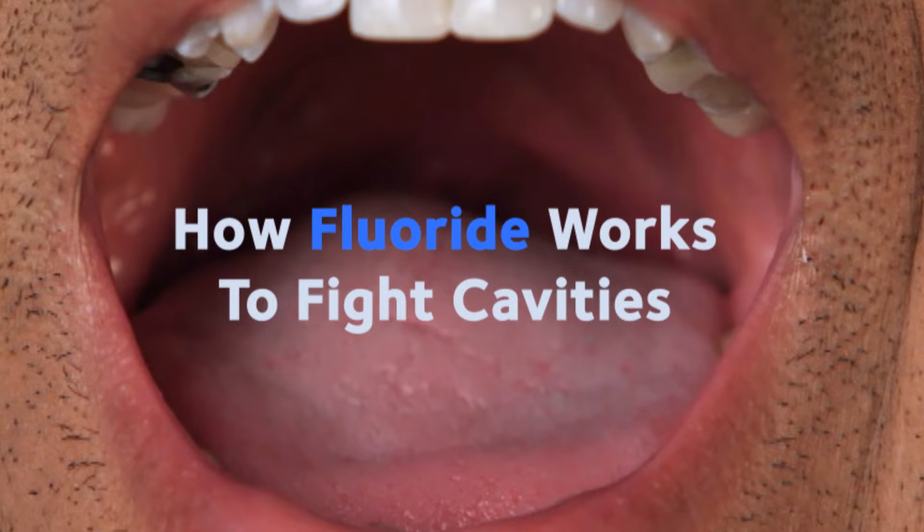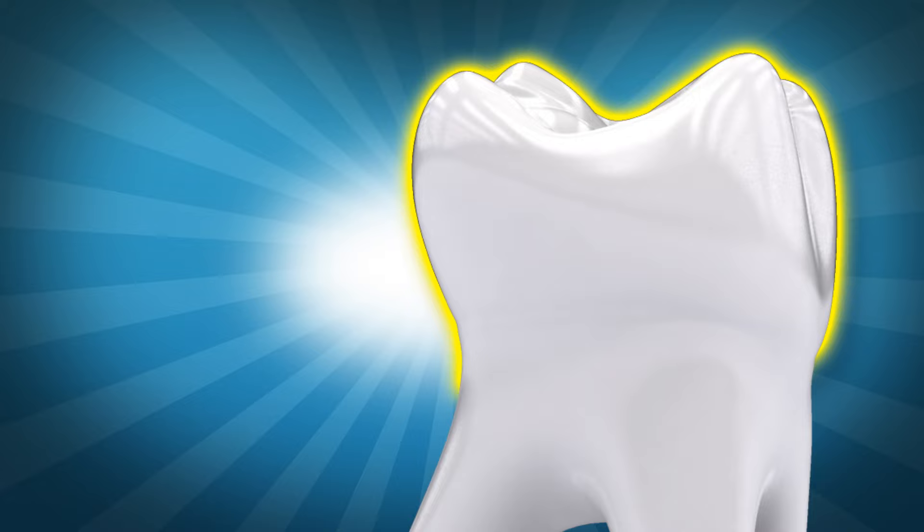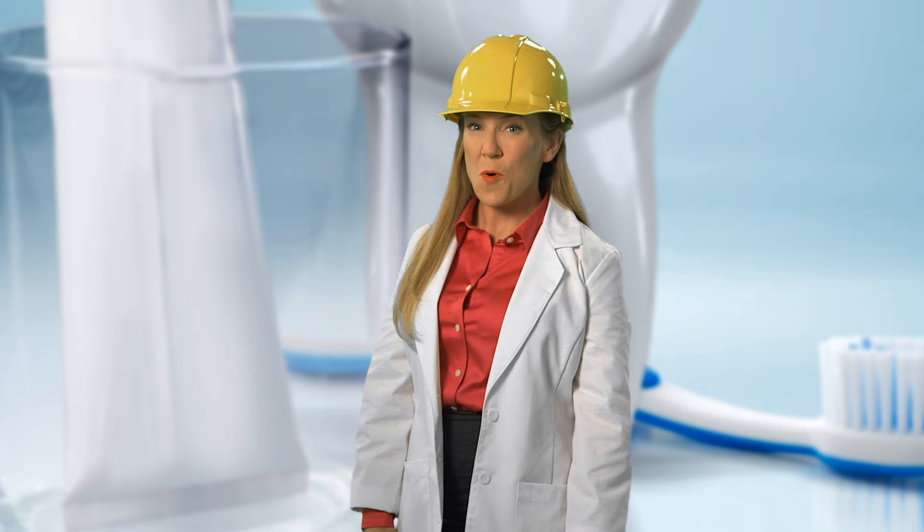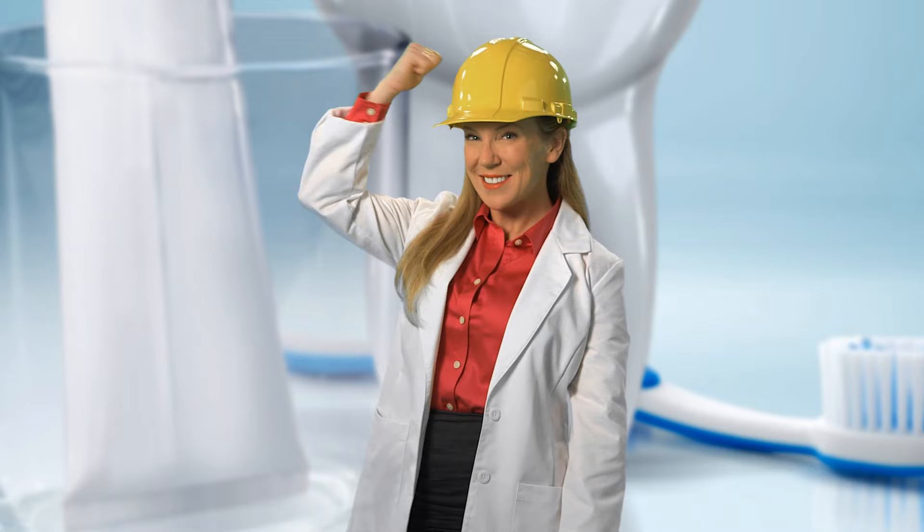Here's the science behind how fluoride works to fight cavities. Tooth enamel, the outer covering of your teeth that's stronger than bone, is made up of a compound called hydroxyapatite. The main minerals in hydroxyapatite are calcium and phosphate. Your saliva is loaded with calcium and phosphate and bathes the teeth to keep them strong.